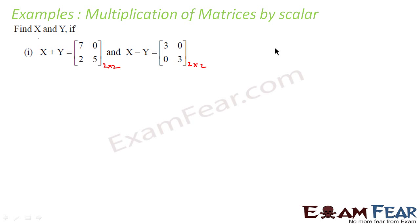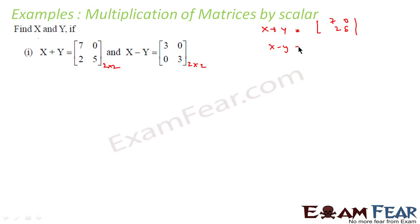In a typical scenario, if we have two equations X plus Y equal to something and X minus Y equal to something, how do we find the value of X and Y? We equate those two equations. Similarly here, we have X plus Y equal to [7 0; 2 5] and X minus Y equal to [3 0; 0 3]. What we will do is add these two — if we add, Y is gone.